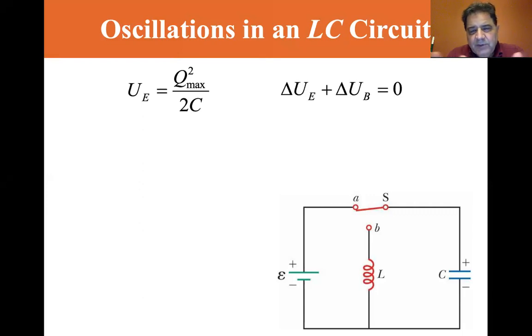So we have energy stored in a magnetic field and energy stored in a capacitor. If we put a capacitor and an inductor together, there should be an exchange of energy. Because of conservation of energy, the change in energy of the electric field plus the change in energy of the magnetic field should equal zero. In other words, when one increases, the other should decrease and vice versa.